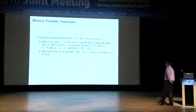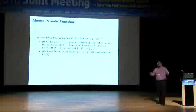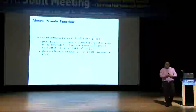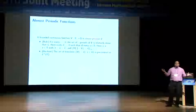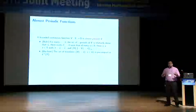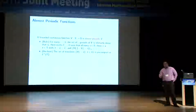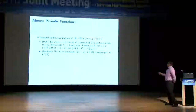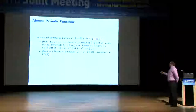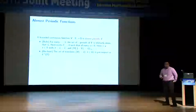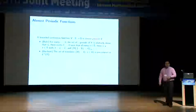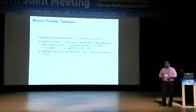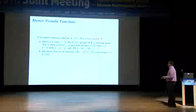An equivalent characterization: you look at all the translates of the function, take any subsequence, and you want a convergent subsequence in the L-infinity norm. Put differently, if you look at the closure of the set of translates in L-infinity, it's a compact set. This compactness makes a link to a third way of viewing almost periodic functions.